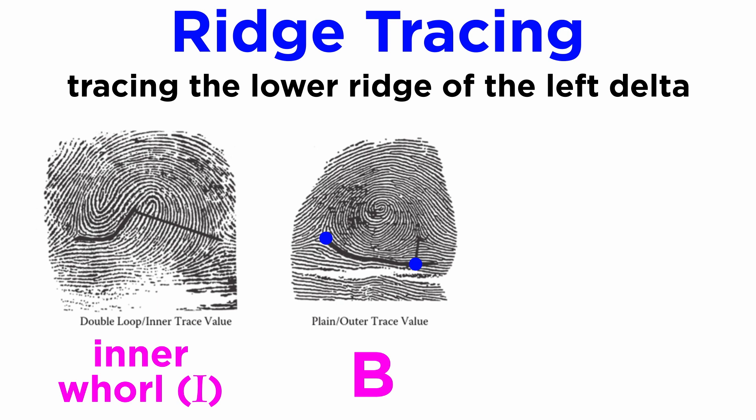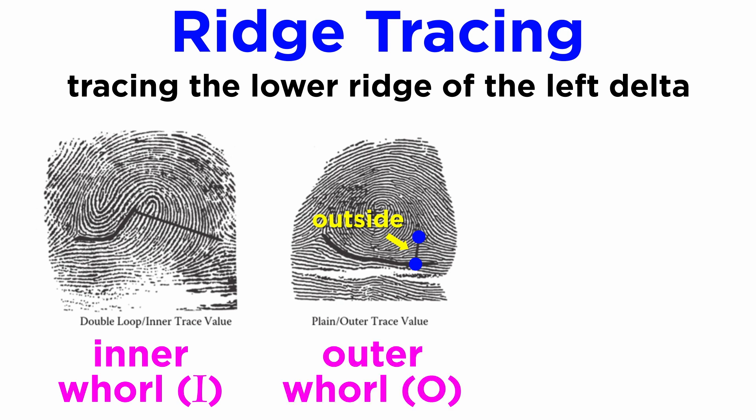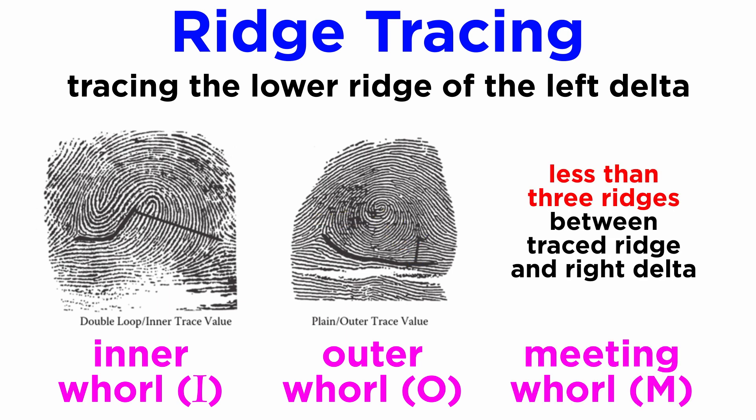Similarly, in pattern B, the traced ridge seems to lie outside the right delta. The ridges intervening between the traced ridge and the right delta are counted. If this ridge count is three or more than three, the ridge tracing is considered to be outside, and the pattern is described as an outer whorl, denoted with a capital O. If less than three ridges are intervening between the traced ridge and the right delta, it doesn't matter whether the traced ridge lies inside or outside of the right delta — such a ridge tracing is classified as meeting, and the pattern as a meet or meeting whorl, denoted with a capital M.